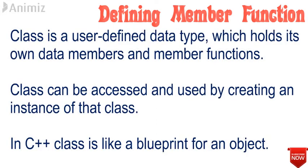In other words, a class is a user-defined data type which holds its own data members and member functions. A class can be accessed and used by creating an instance of a class. In C++, a class is like a blueprint of an object.